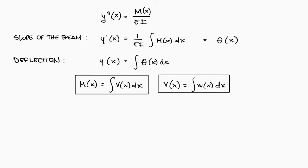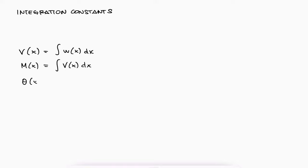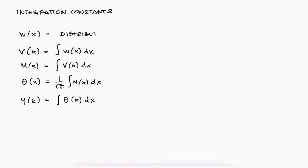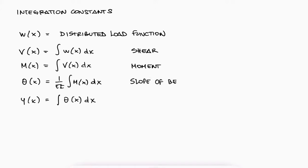A link to this proof is found in the description below. With these relationships, we can conclude that to find the slope or deflection of a beam at any point along the axis, we begin by writing the distributed load function w(x), integrate once to find v(x), integrate again to find m(x), integrate yet again to find the slope function — with the elastic modulus and second moment of area of course — and one more time to find the deflection.